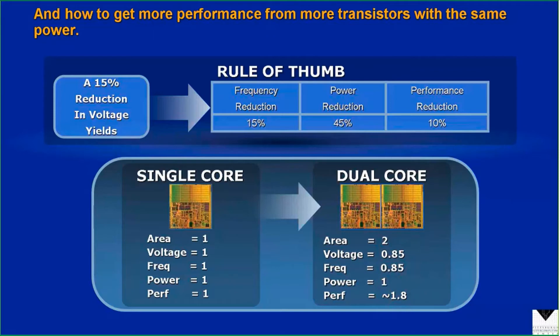Then we're going to have the same amount of power because of the way power scales, but we're going to have about 1.8 times the performance we used to have. This math right here is exactly what drives parallel computing — it drives all computer design today because everything today has multiple cores in it. Your Xbox or your PlayStation has multiple cores. Your cell phone has multiple cores. Everybody's gone to multiple cores for this reason: with multiple cores you can throttle back a little bit, keep the clock speed stuck at a couple gigahertz, but get more and more performance by adding more and more cores.